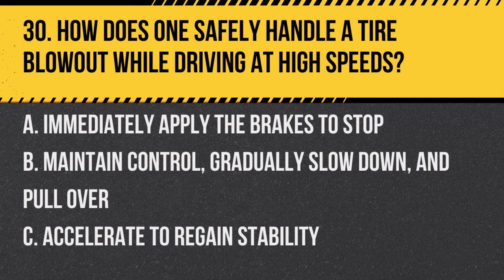Question 30. How does one safely handle a tire blowout while driving at high speeds? A. Immediately apply the brakes to stop. B. Maintain control, gradually slow down, and pull over. C. Accelerate to regain stability. Answer: B. Maintain control, gradually slow down, and pull over. It's important to stay calm, maintain control, and slowly reduce speed to stop safely.